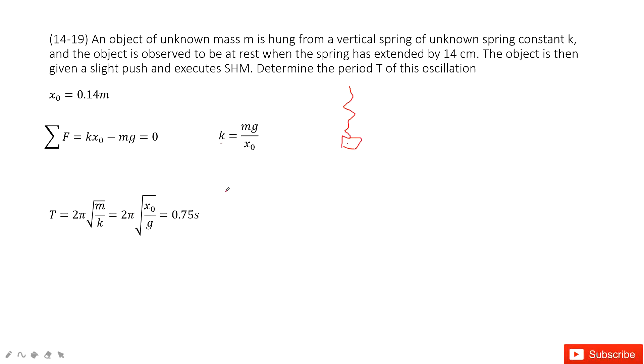We can input k inside. If we input k inside, the mass and mass can be cancelled. Then you get this function. And input the x knot, you get the final answer there.